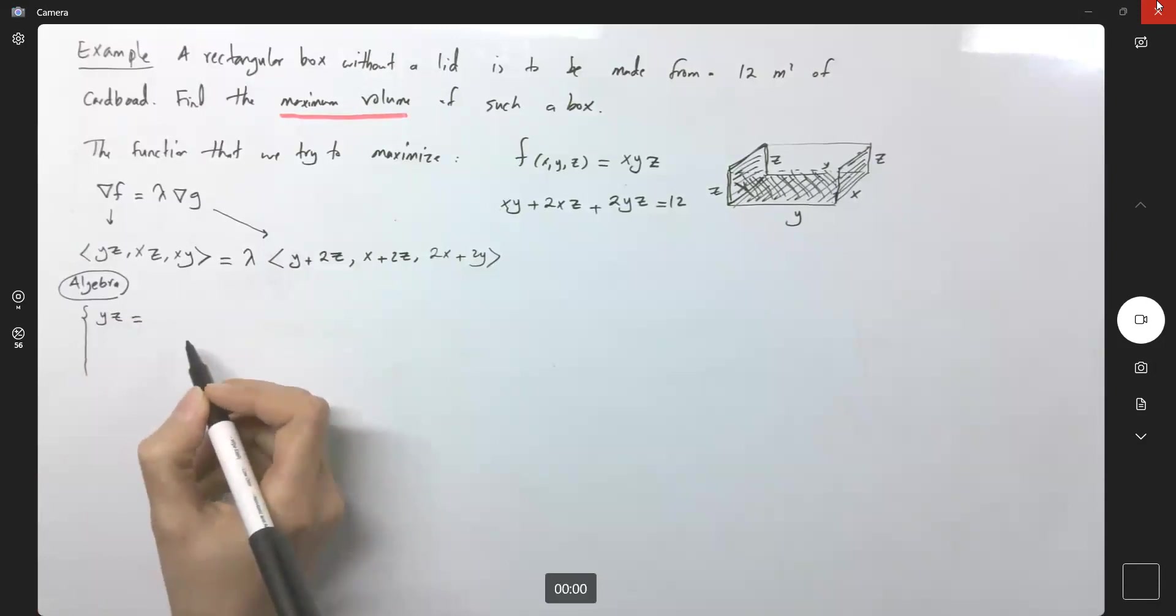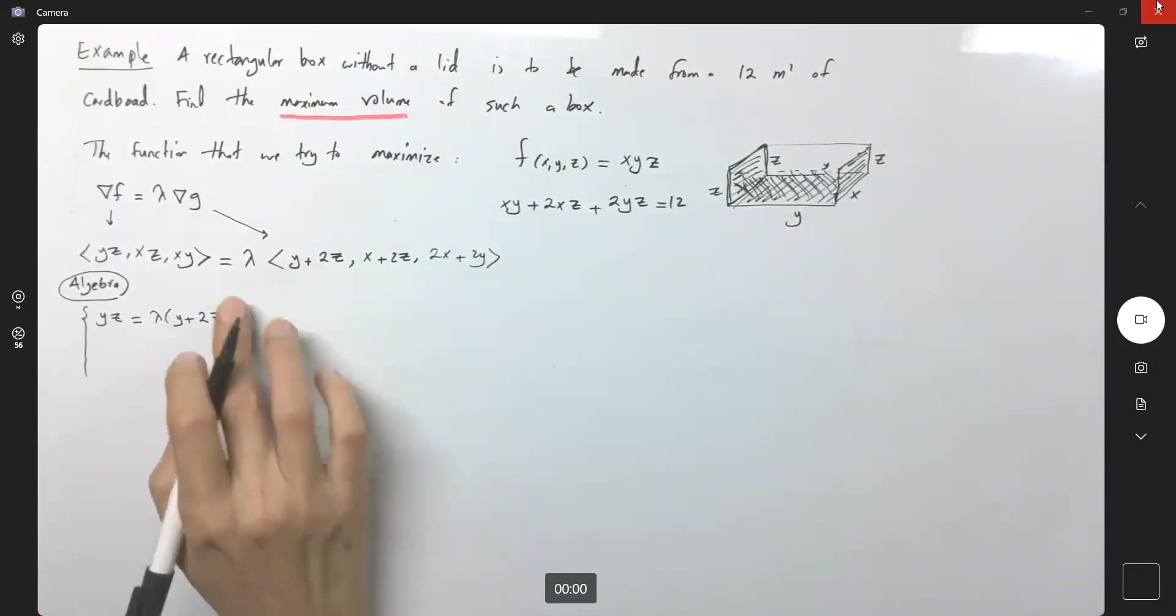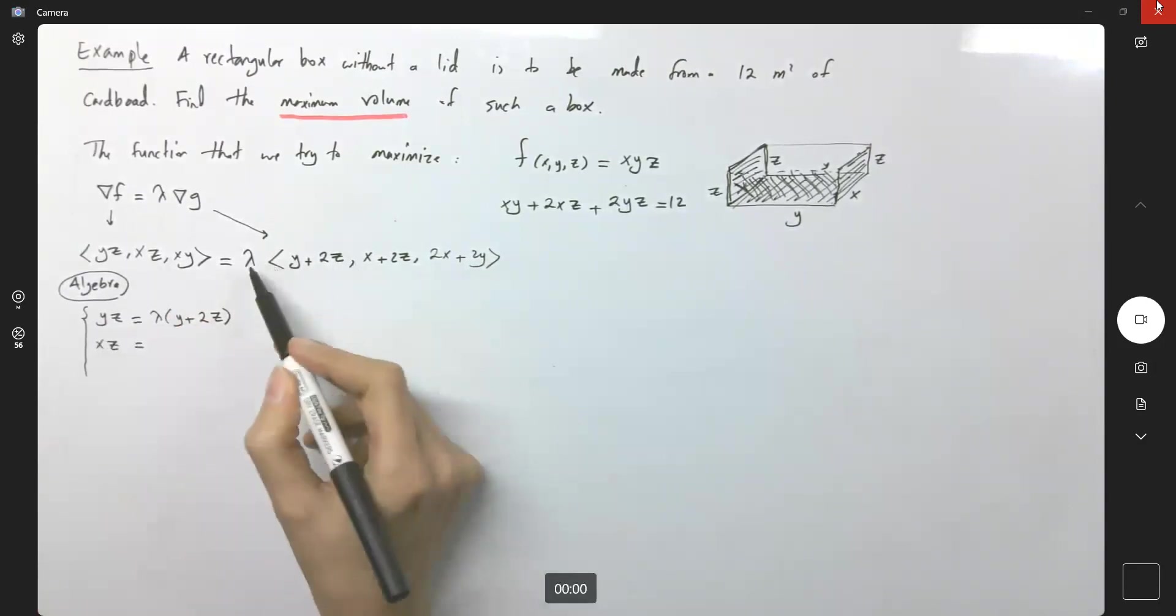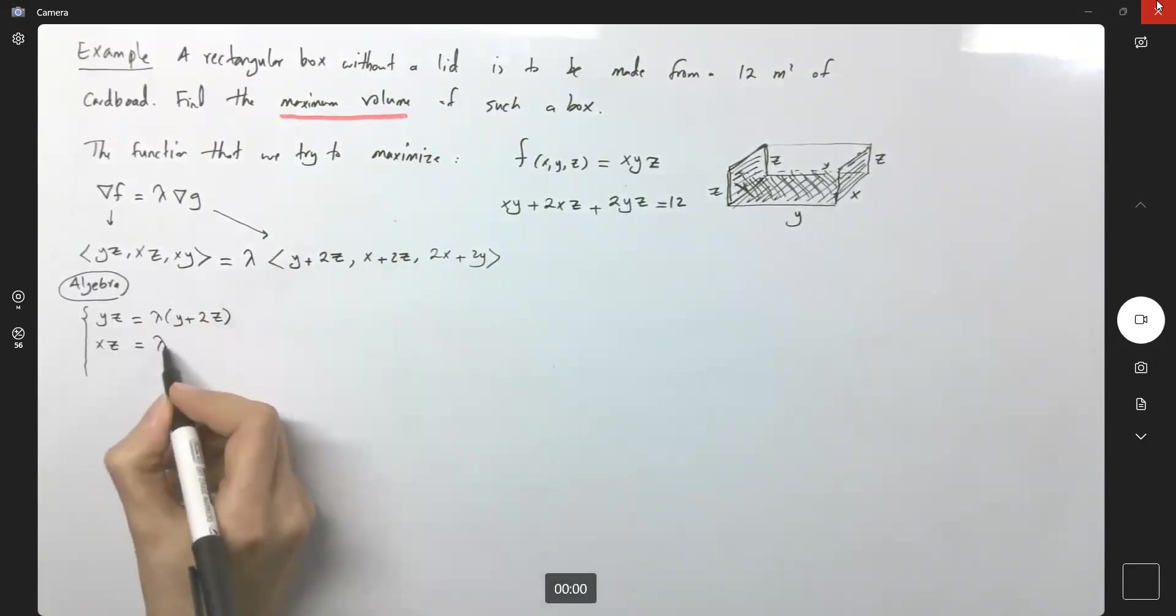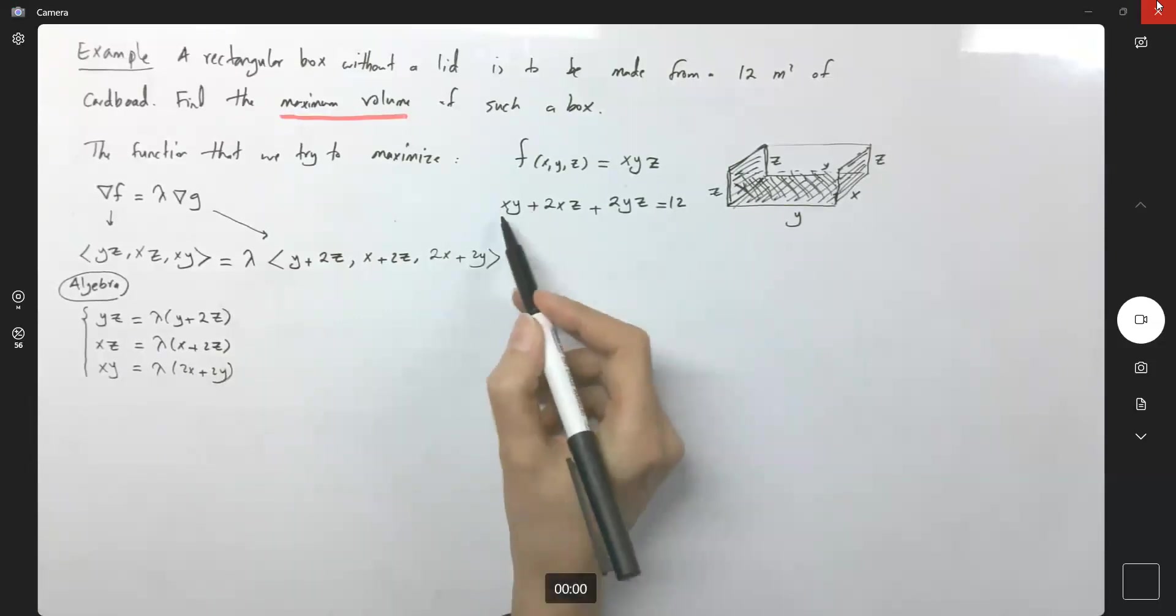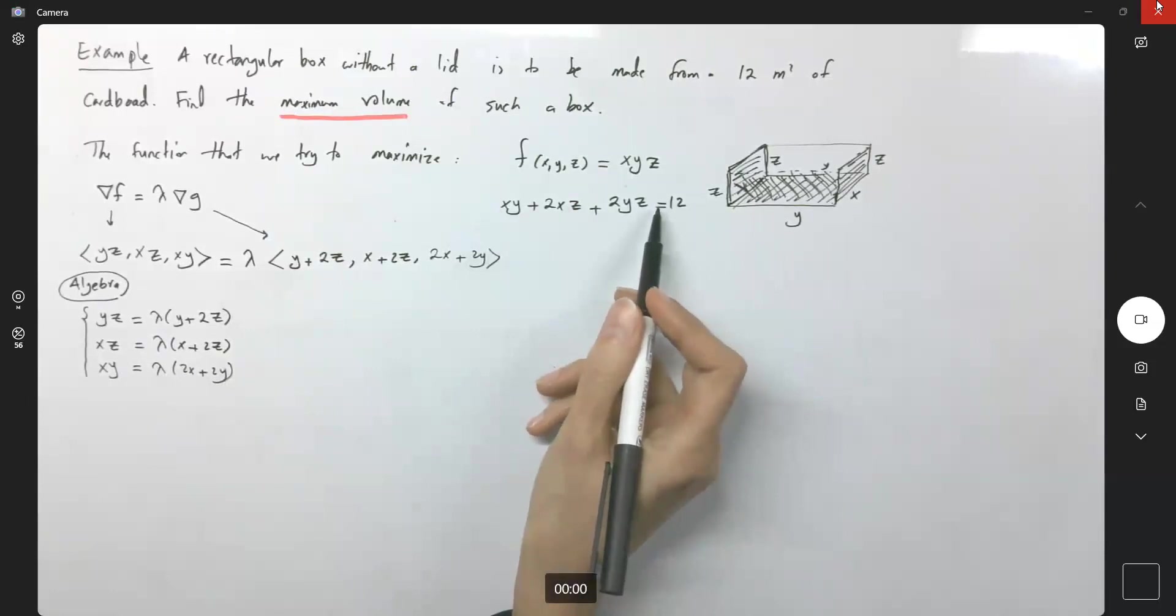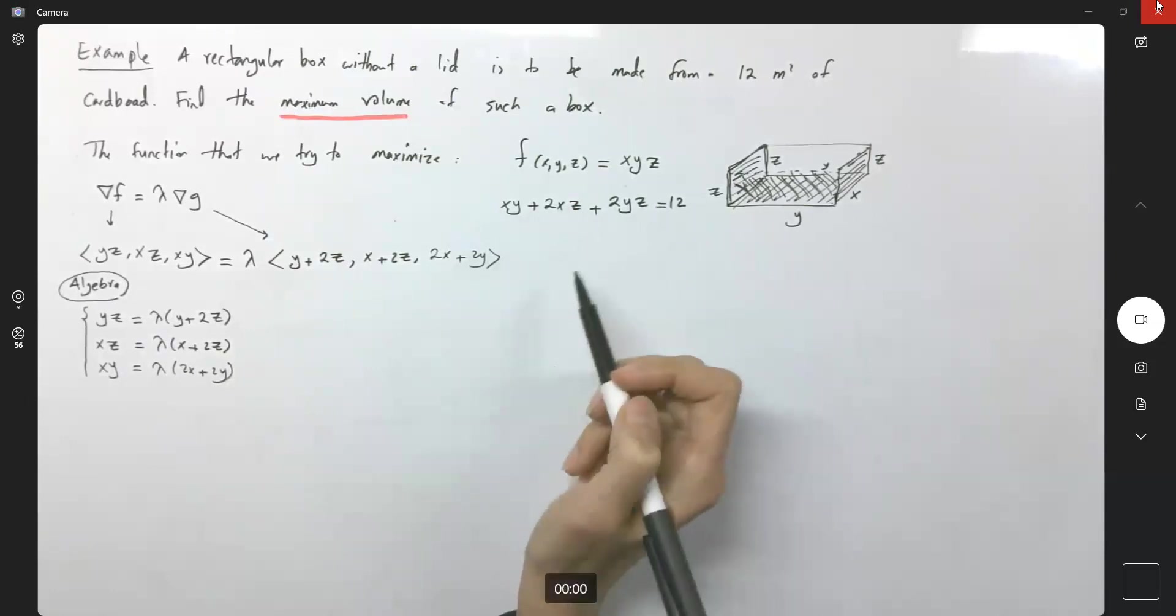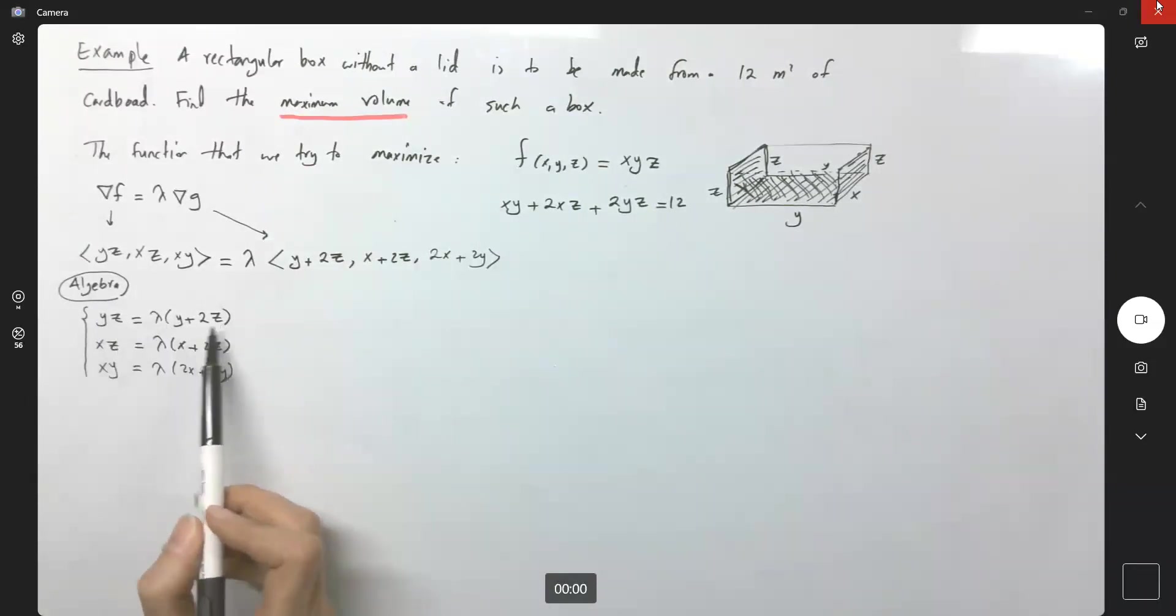The first components must be equal to each other. The second components must be equal to each other. The third components must be equal to each other. So let's take a look at this. y, z must be equal to lambda times y plus two z. That wasn't that difficult. The second row: x, z must be equal to lambda times x plus two z. The next one: x, y is equal to lambda times two x plus two y. And note that I have this constraint here as well. It is important. I'm just emphasizing this guy as well.